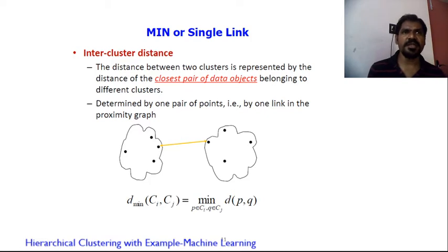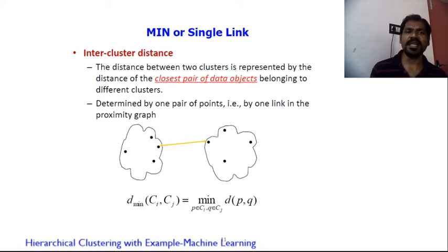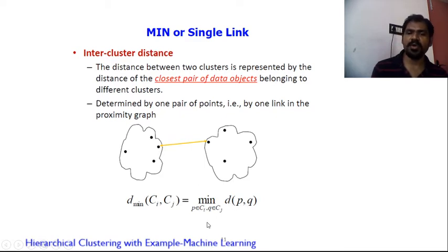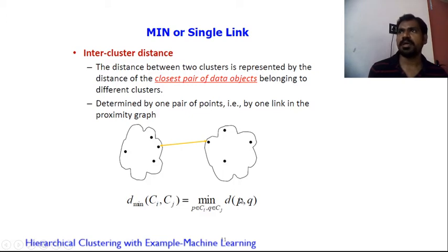There are three ways to represent inter-cluster distance. The first is minimum or single link: the distance between two clusters is the distance of the closest pair of data objects belonging to the clusters. I find the minimum of distance between point p and point q — for example, x1 minus x2 squared plus y1 minus y2 squared — and take the minimum value.